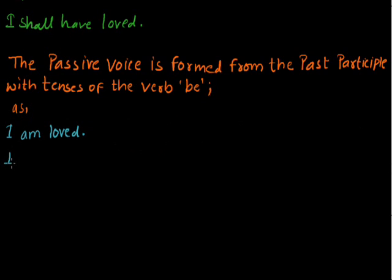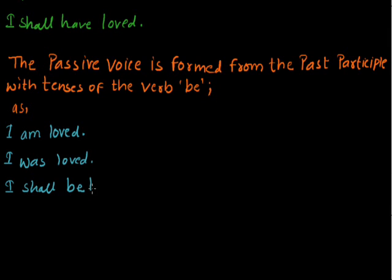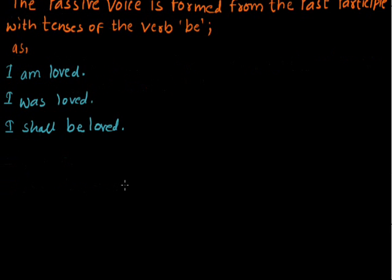'I was loved' is the passive voice of simple past tense and 'loved' is again the past participle. 'I shall be loved' is again a passive voice and 'loved' is the past participle. So, the past participle is used in the passive voice as well as in the active voice.